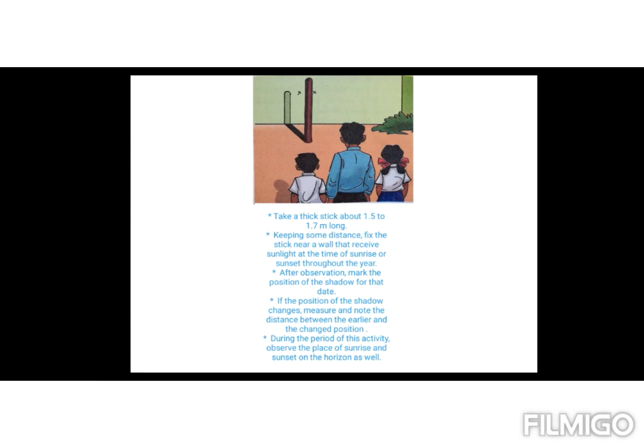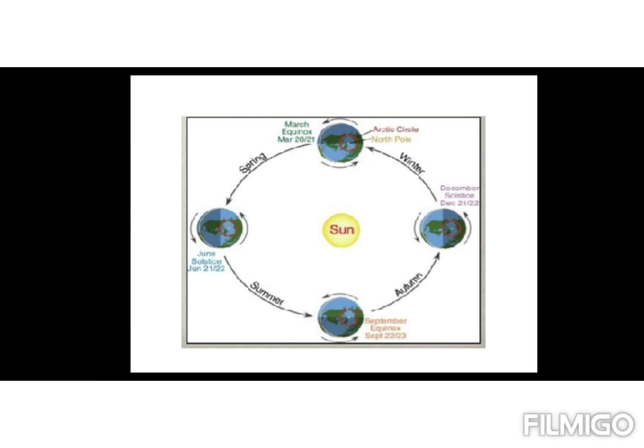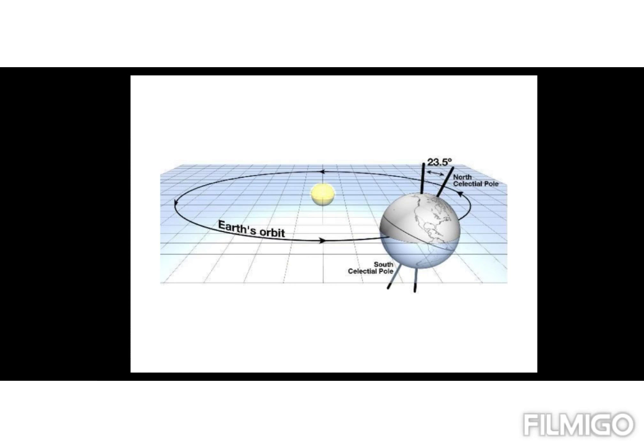But actually, the Sun remains in the same place and it is Earth with its inclined axis that revolves around the Sun. That is why, when we look from Earth, it seems that the Sun is moving.